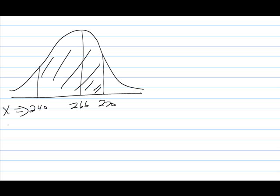We still start off the same. We draw a picture, then we figure out our Z values. We already know the Z value for 240 is negative 1.6. The Z value for the mean is, of course, zero.